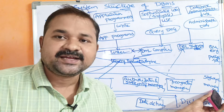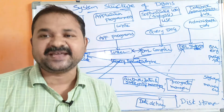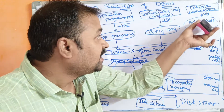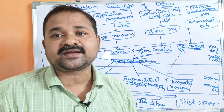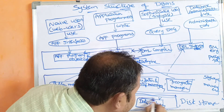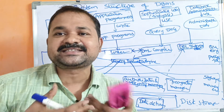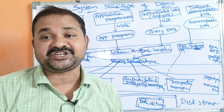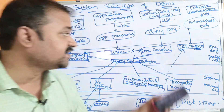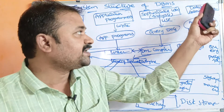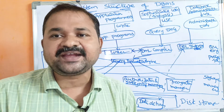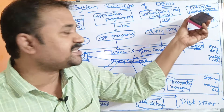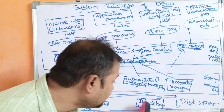First, let us see about the DDL interpreter. The DDL interpreter interprets the commands written by the database administrator and stores that schema in the data dictionary. The data dictionary mainly contains schema — that is, the database information and the database's internal structure. That structure information will be stored in the data dictionary. So the major task of the database administrator is to write DDL schemas and commands, and the DDL interpreter interprets those schema structures and stores them in the data dictionary.